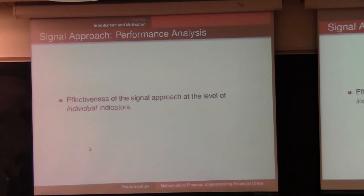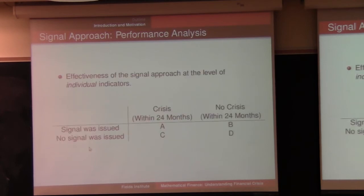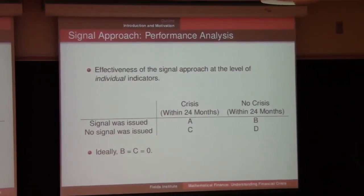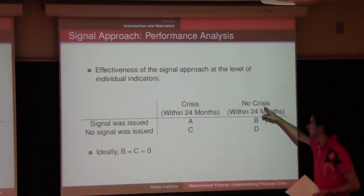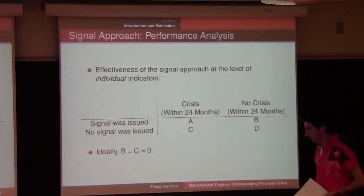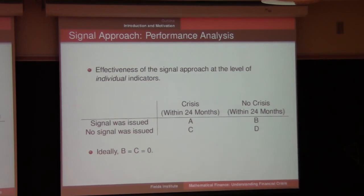For performance analysis, we assess the signal approach at the level of individual indicators. You build a simple matrix: if a signal is issued in the 24 months before a real crisis, you increment one cell; if a signal is issued and no crisis follows, you increment another. The perfect indicator is where false signals and missed signals equal zero — a signal always precedes a crisis, and no signal is issued without a crisis.